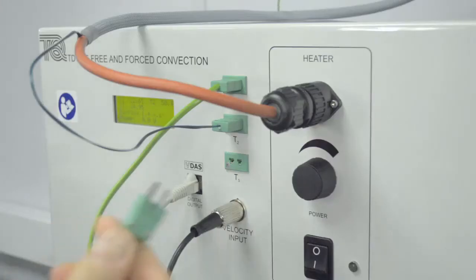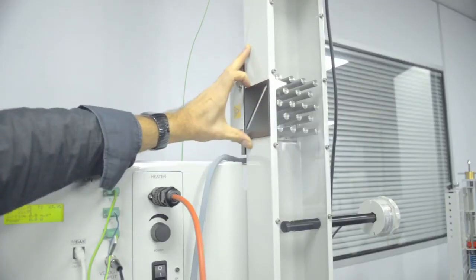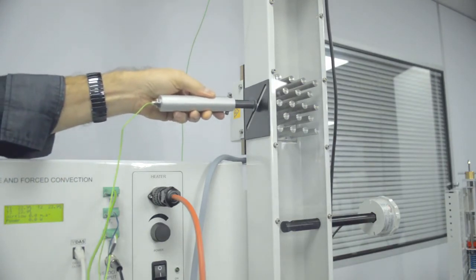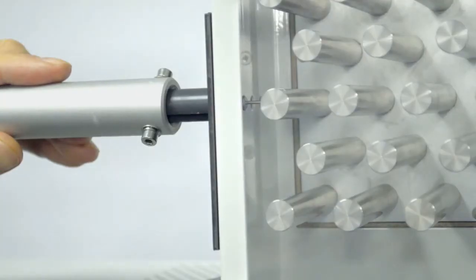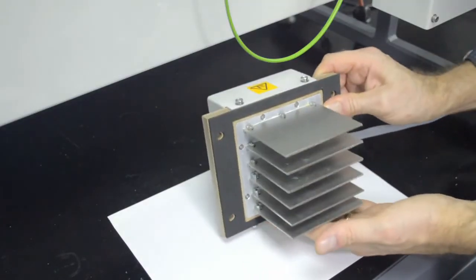Thermocouples measure the air temperature upstream and downstream of the surface and the temperature at the heat transfer surface. An additional handheld probe allows students to measure the temperature distribution along the extended surfaces for pinned and finned heat transfer surfaces.